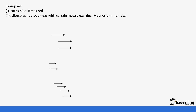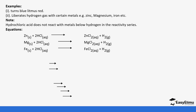When hydrochloric acid reacts with metals it liberates hydrogen gas. This occurs with certain metals like zinc, magnesium, and iron. Hydrochloric acid does not react with metals below hydrogen in the reactivity series, such as copper, because they are not able to displace the hydrogen ions in the acid. Only metals above hydrogen in the reactivity series will react.